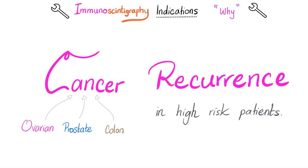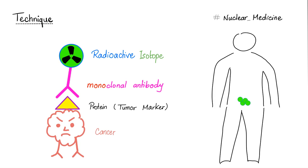Cancer recurrence. Let's say I'm a patient — I had cancer before, and I am at high risk of having the same cancer again, whether it's ovarian, prostate, or colon cancer. How would I know that the cancer came back? One of the ways to know is immunoscintigraphy. Here is the cancer. On top of the cancer surface there is a tumor marker, which is a protein. Different cancers have different tumor markers. If this is prostate cancer it will have a different tumor marker than ovarian cancer, colon cancer, etc.